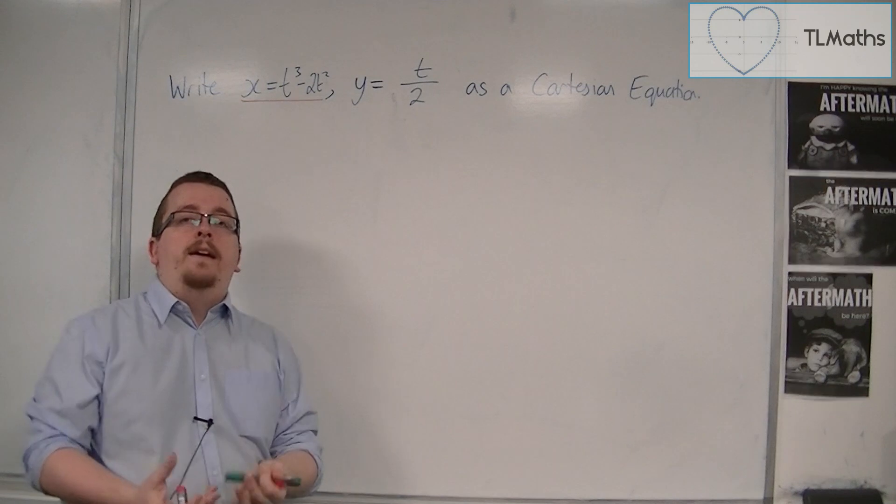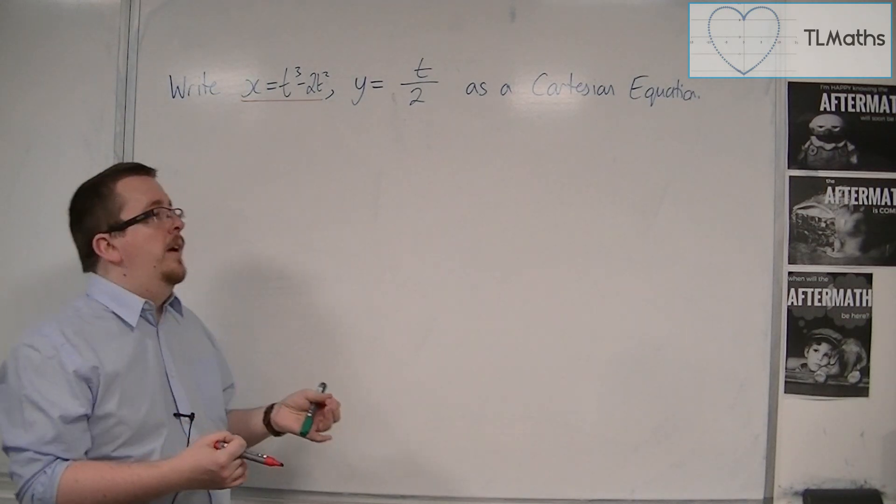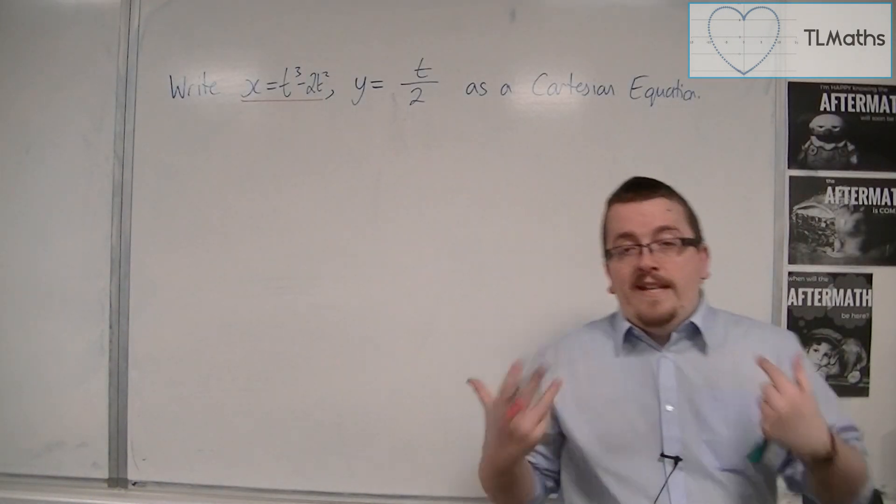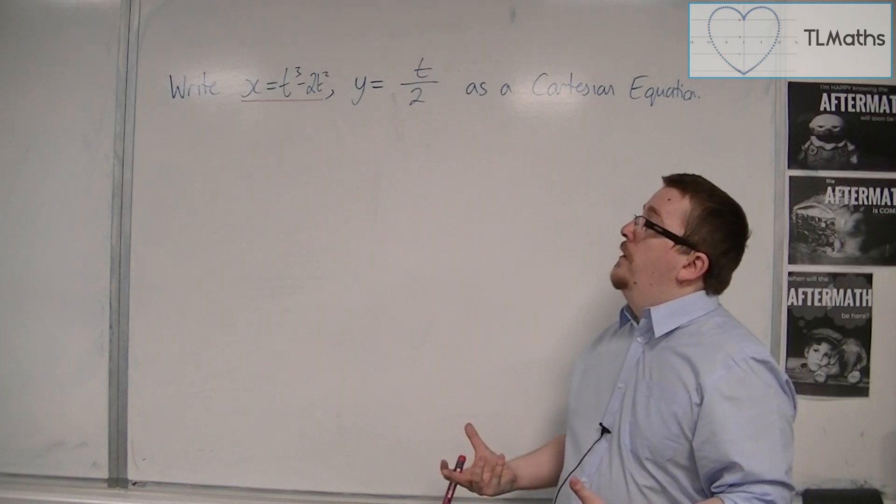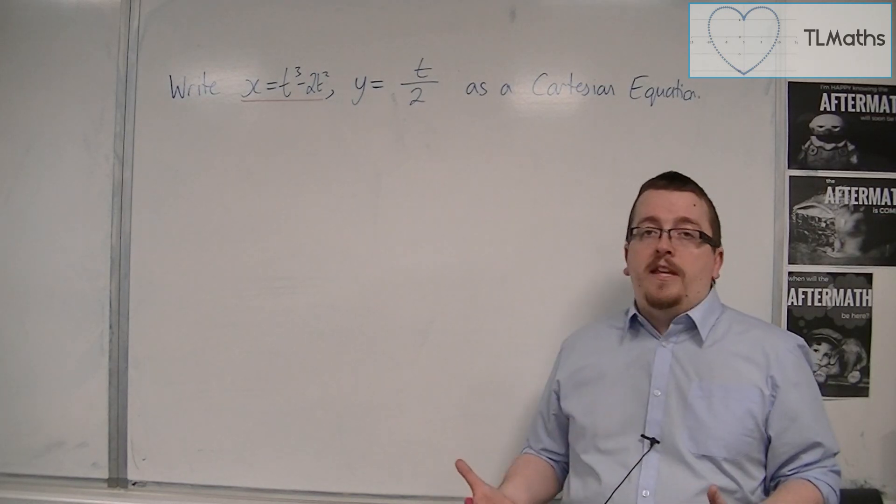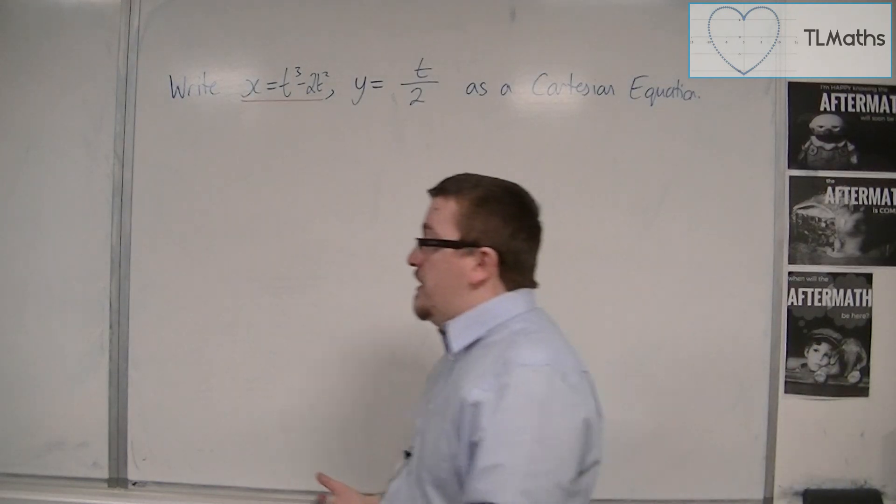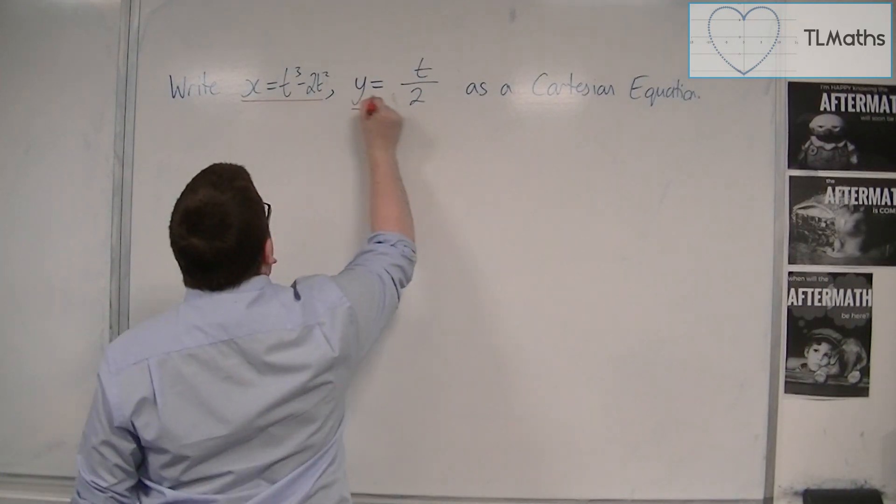You cannot write it as t equals just a function of x. So in that way, we cannot rearrange that one to get it in terms of t equals and then substitute it into this one to write it as a Cartesian equation. So we have to start with this one.